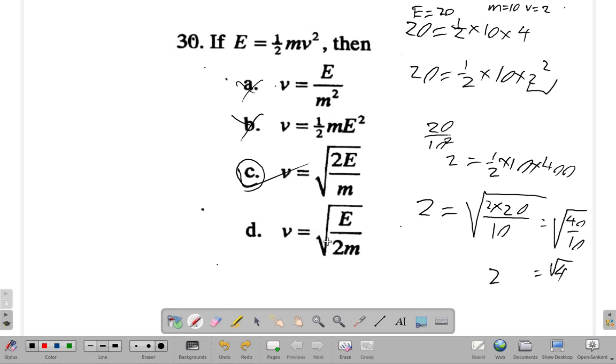It wouldn't work for D because if I say v is 2, 2 = √(E is 20 over 2 times m). What is m again? M is 10. Then I would say the square root of 20 over 2 times 20. But 20 over 20 is 1. The square root of 1 is 1, not 2, so D wouldn't work out either. So once it's multiple choice, you can play these tricks and get the answer or get rid of some of these wrong answers.